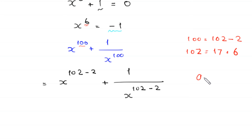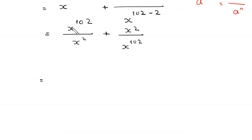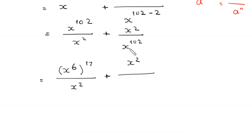By using the power rule — a to the power m minus n equals a to the power m divided by a to the power n — this becomes x to the power 102 divided by x squared, plus x squared divided by x to the power 102. Then x to the power 102 can be written as x to the power 6, whole to the power 17, divided by x squared, plus x squared divided by x to the power 6 whole to the power 17.